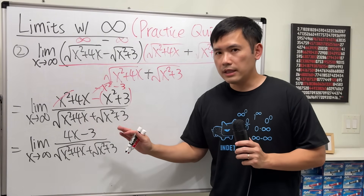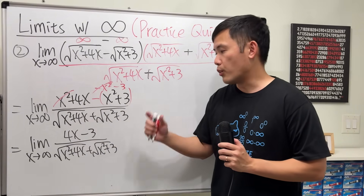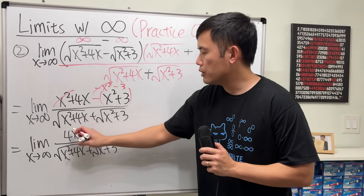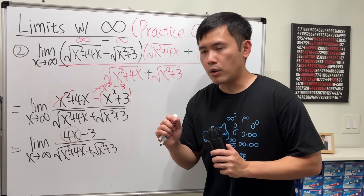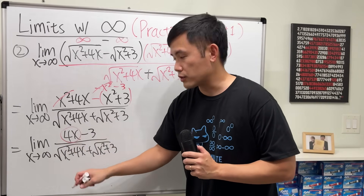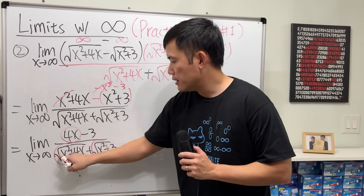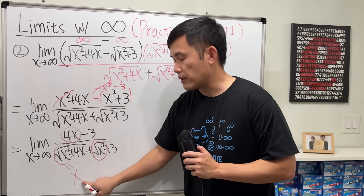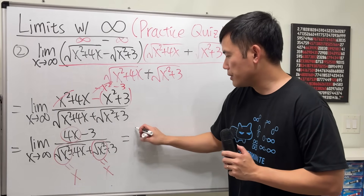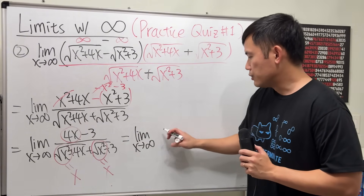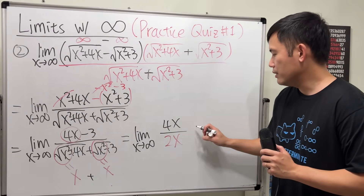Although this isn't a traditional rational expression, it works the same way because of the powers. As x goes to infinity, on the top we care about 4x — the minus 3 is negligible. From the bottom, pick out the biggest power: x squared inside each square root. Since x is approaching positive infinity, square root of x² is just x. So the dominant terms on the bottom are x + x = 2x. We get 4x over 2x, reduce out the x, and get 4 over 2, which is 2. Done.